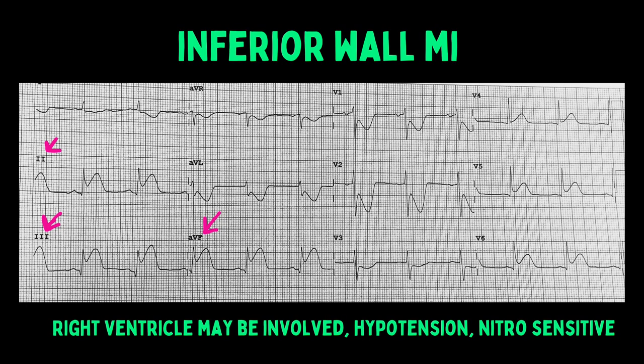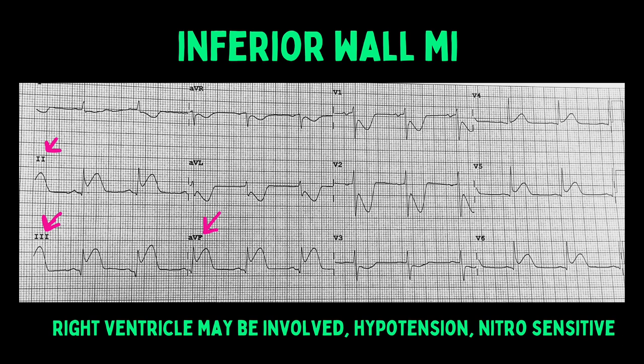However, it does matter to know where the MI is occurring when there is an inferior wall MI — that is the exception. ST elevations in leads 2, 3, and AVF — commit that to memory, they're on every test ever. Patients who are having an inferior wall MI can crash, and they crash hard because the right ventricle is often also involved. These patients drop their pressures precipitously without IV fluids, and if you give them nitroglycerin.